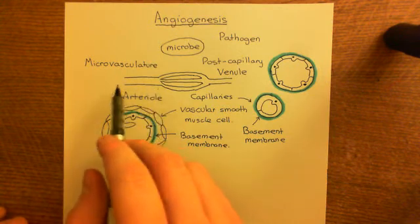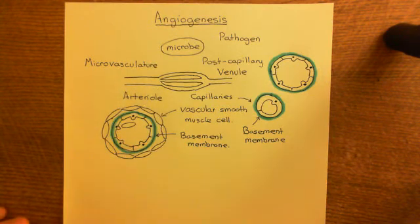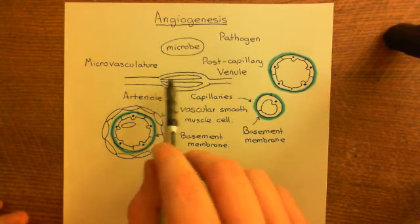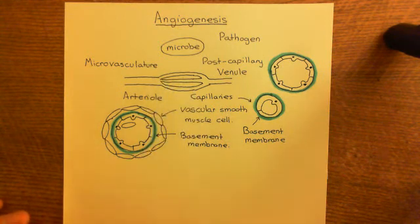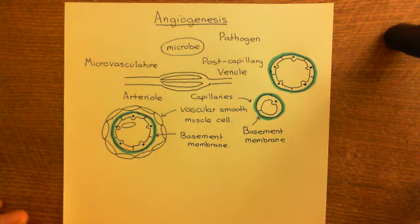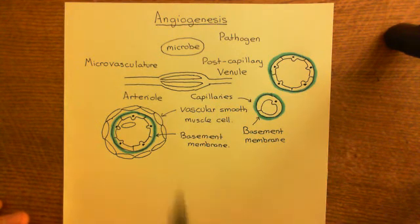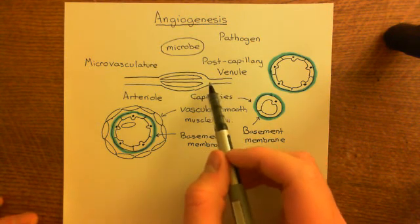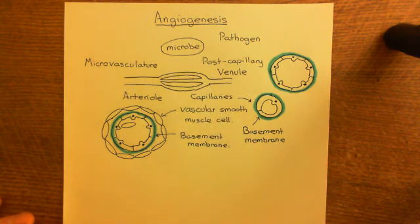To summarise: oxygenated blood comes in through arterioles, goes through many capillaries where it gives away its oxygen and glucose to the tissue and receives waste products such as carbon dioxide, then the blood vessels reconverge to form a venule carrying deoxygenated blood. We'll continue this discussion in the next video.